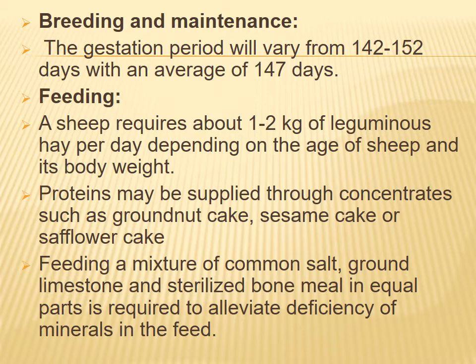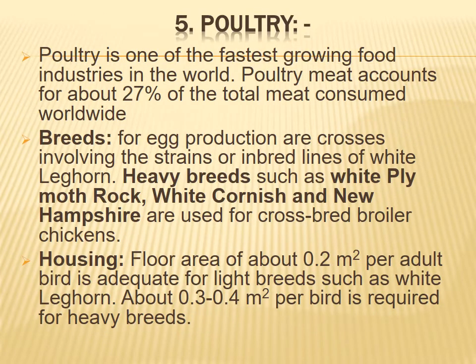Fifth, poultry. Poultry is one of the fastest growing food industries in the world. Poultry meat accounts for about 27 percent of total meat consumed worldwide. For egg production, crosses involving strains or inbred lines of White Leghorn are used. Heavy breeds such as White Plymouth Rock, White Cornish, and New Hampshire are used for crossbreeding broiler chickens.